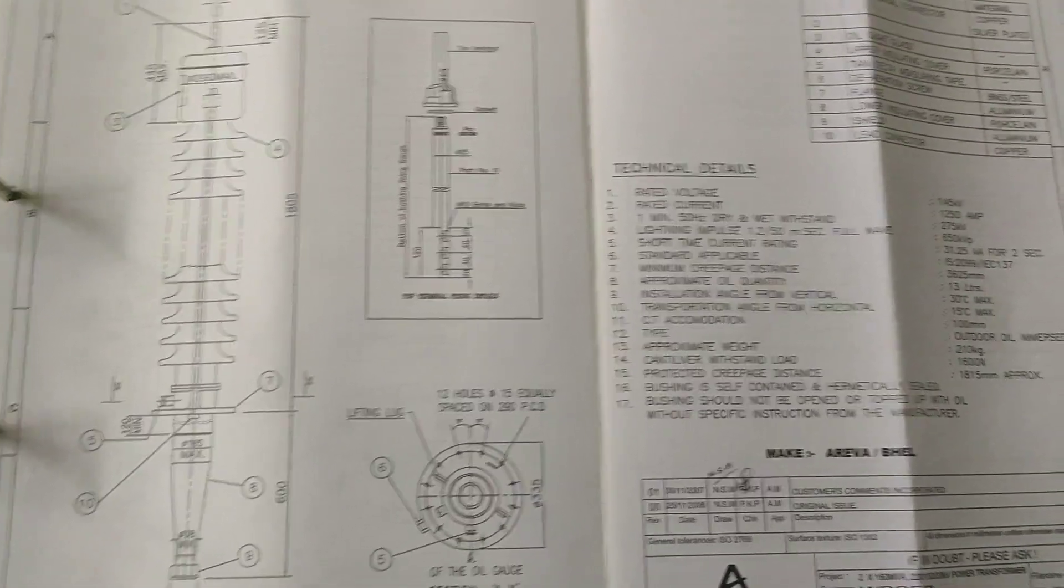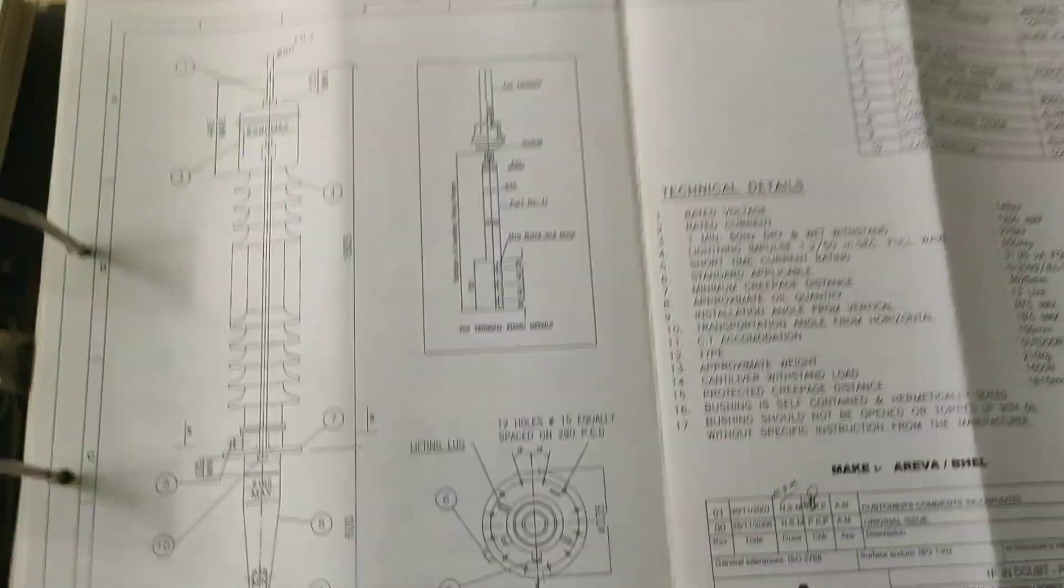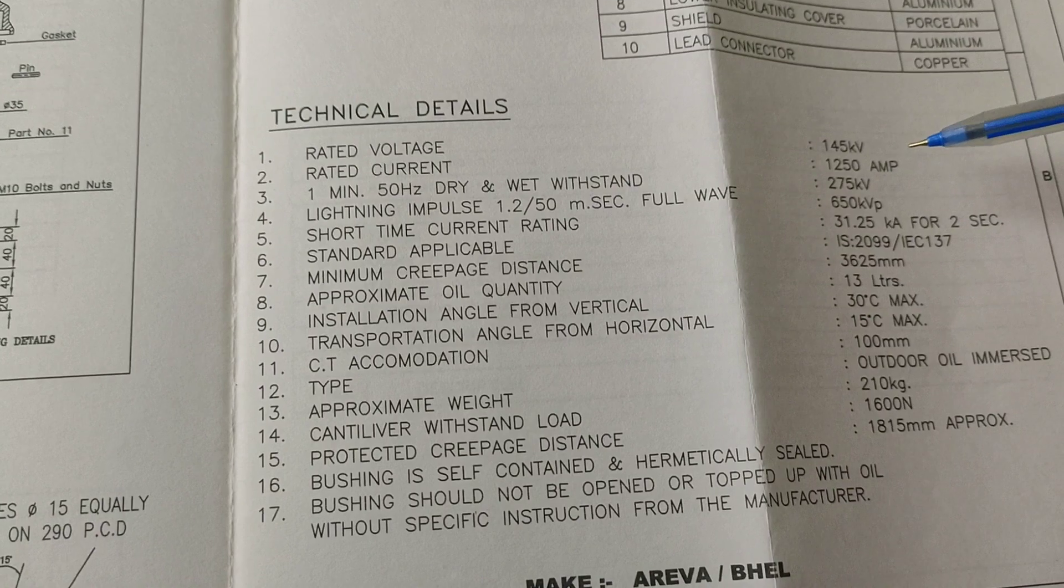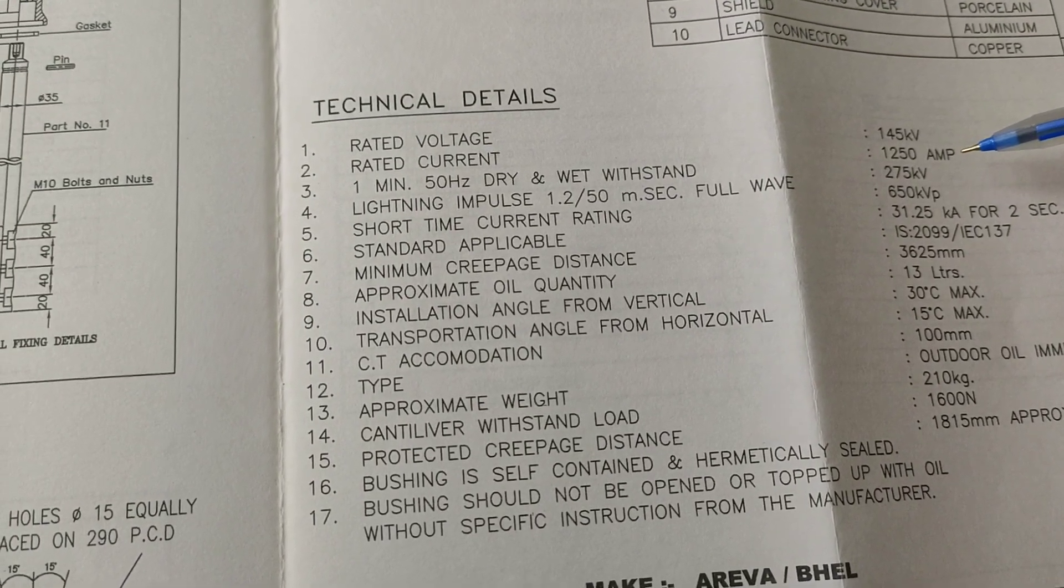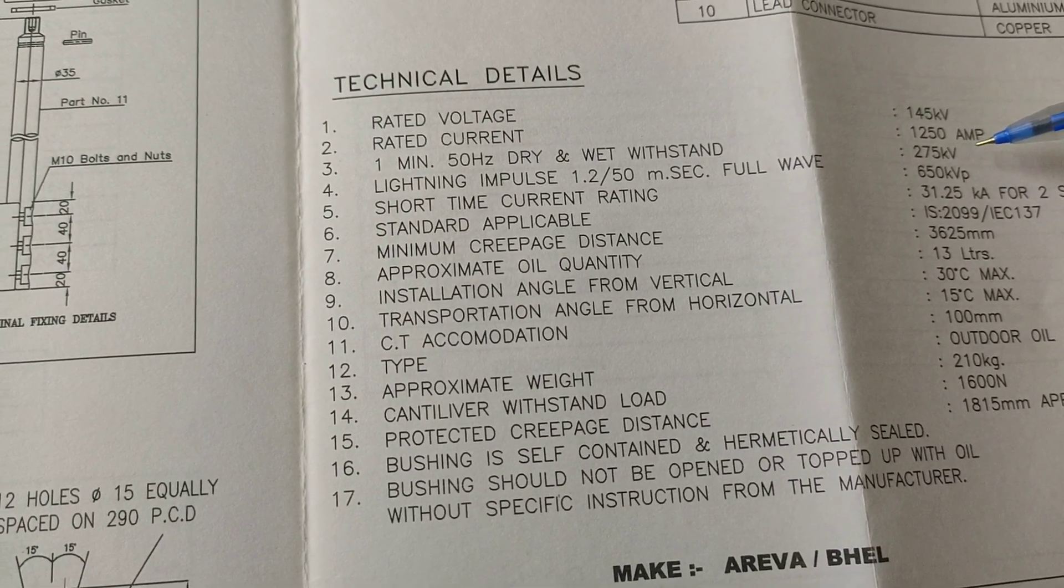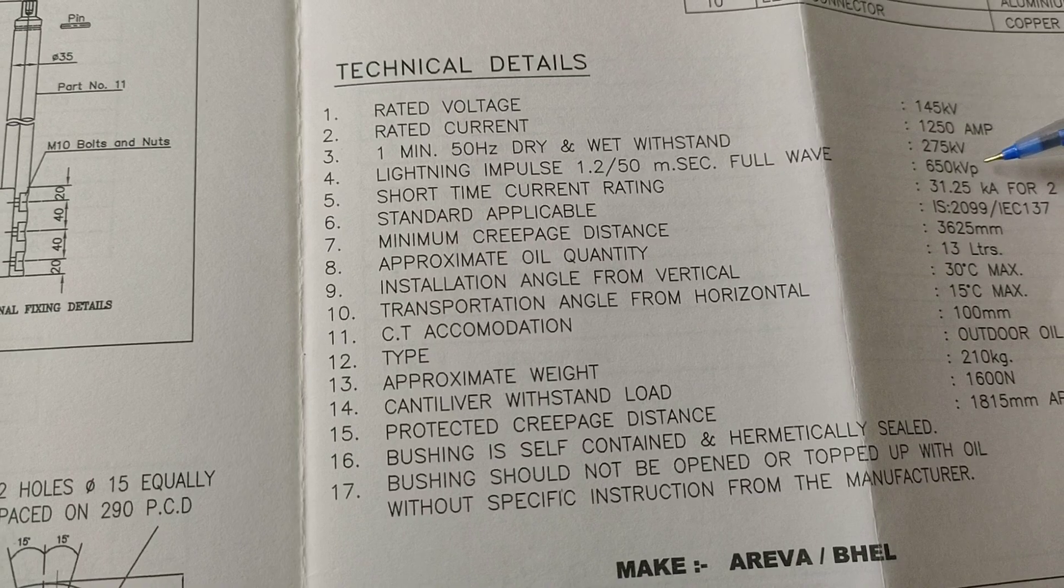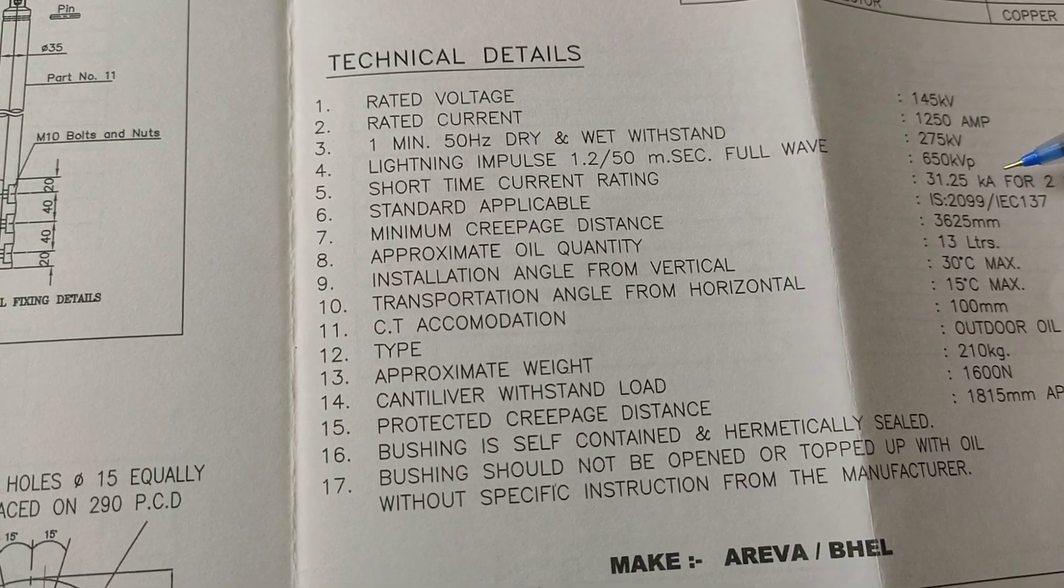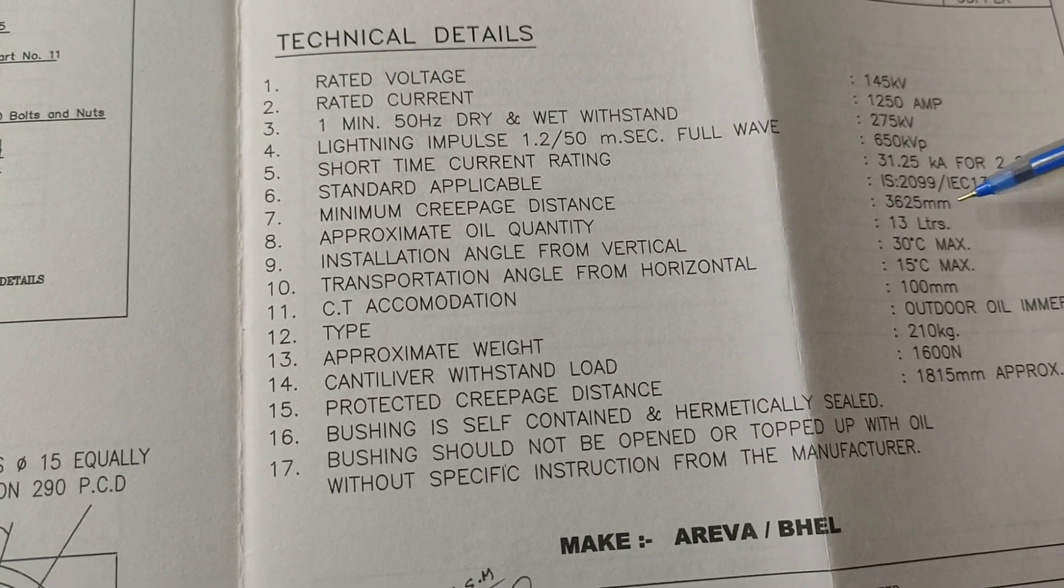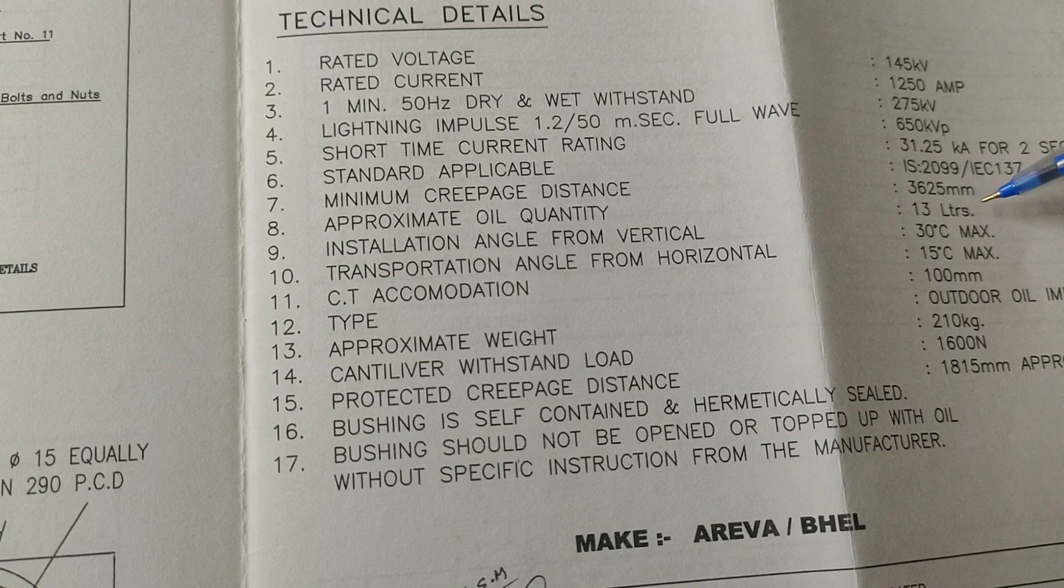This is the 132 kV side bushing of 160 MVA transformer. Here the pictorial representation of bushing. The technical specifications: rated voltage is 145 kV, rated current is 1250 ampere, one minute 50 hertz dry and wet withstand voltage is 275 kV, lighting impulse is 650 kV, short circuit current rating 31.25 kA for two seconds. Here the minimum creepage distance is 3625 millimeters, approximate oil quantity is 13 liters.